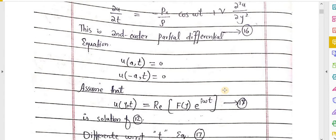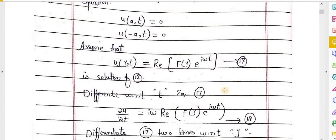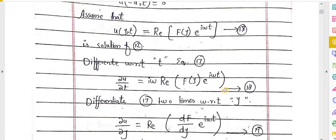We know the methods to determine the solution of a second-order partial differential equation. Equation 17 is the assumed solution form for equation 12. Differentiating equation 17 with respect to t, ∂u/∂t gives equation 18.